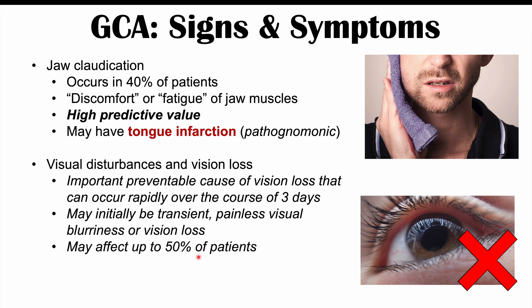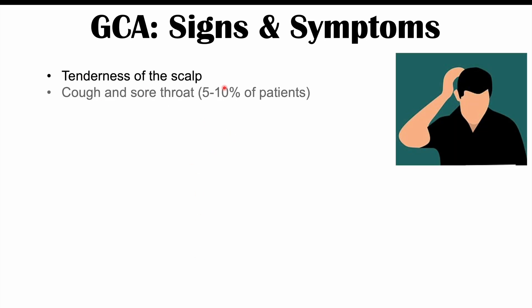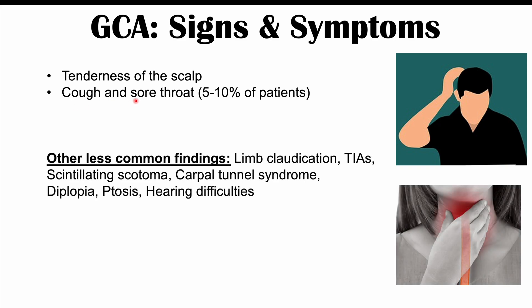Visual symptoms affect up to 50% of patients. Tenderness of the scalp can also occur in GCA. Cough and sore throat occur in 5 to 10% of patients. Less common findings include limb claudication — discomfort and fatigue of the lower limbs, seen in those with iliac artery involvement — as well as transient ischemic attacks, scintillating scotomas, carpal tunnel syndrome, diplopia, ptosis, and hearing difficulties. Diplopia is double vision and ptosis is drooping eyelid.